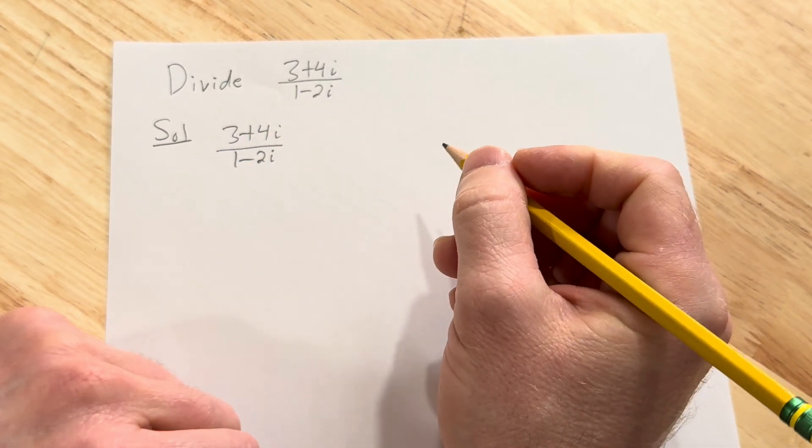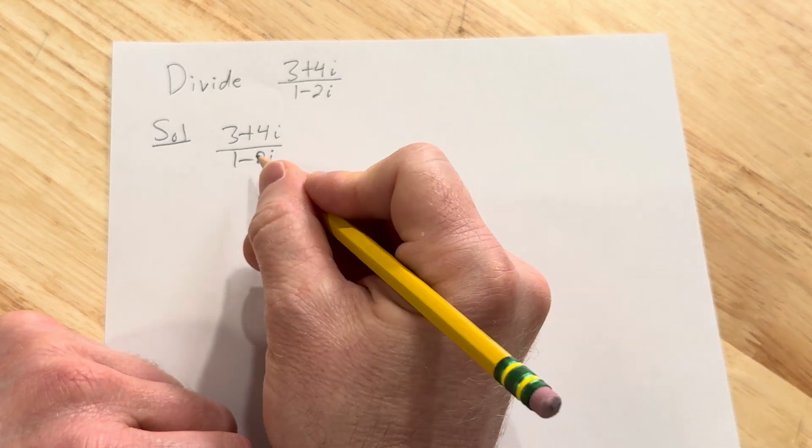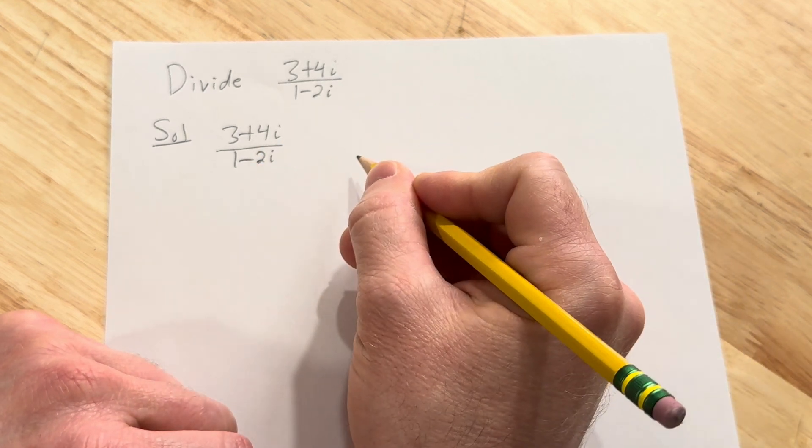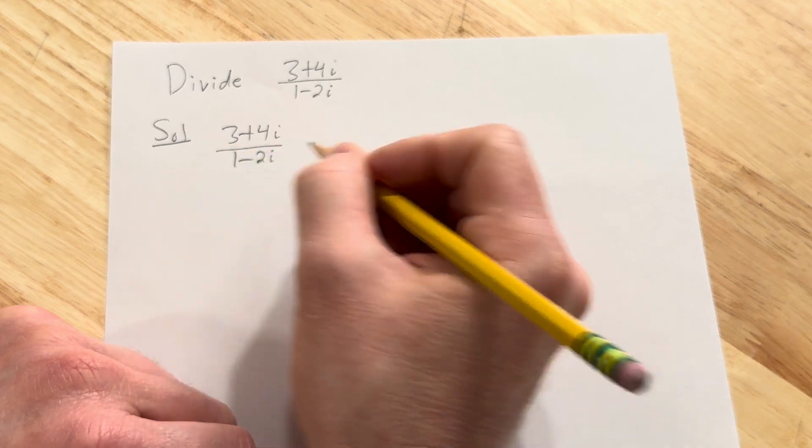And now I want to multiply by what's called the complex conjugate. So the complex conjugate of 1 minus 2i is just 1 plus 2i. All you do is switch the sign.